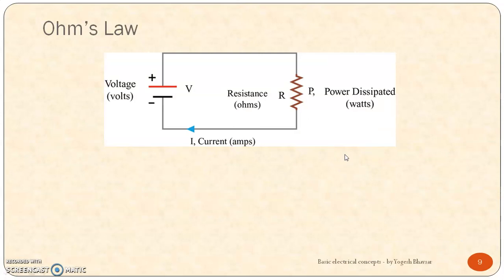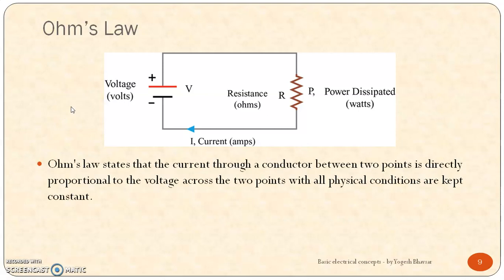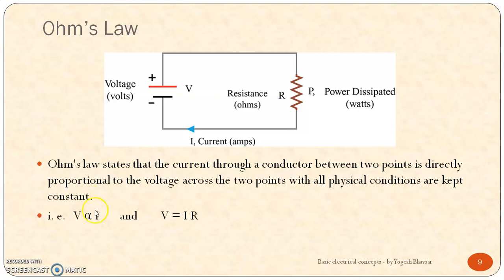The last concept is Ohm's Law. This is a very useful law for electrical engineering. In various circuits this law plays an important role while calculating the unknown voltage, current, or resistance in the circuit. The statement of Ohm's Law states that the current through a conductor between two points is directly proportional to the voltage across those two points, with all physical conditions kept constant. That means if there is a conductor whose resistance is R and voltage V is applied, it causes current I to flow — and that current I is proportional to the voltage V across it. Mathematically: V = IR.